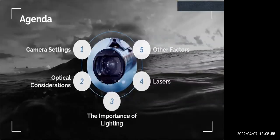Today I'll be covering camera settings, including the three main pillars of photography: aperture, shutter speed, and ISO. Next, I'll cover optical considerations such as sharpness, distortion, chromatic aberration, and field of view. Then we'll talk about lighting and why lasers are used underwater. Finally, I'll move on to other topics such as JPEG, RAW, IP cameras, and mechanical considerations.